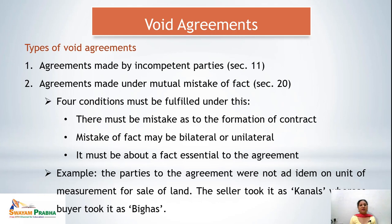The second type of Void Agreement is agreements made under mutual mistake of fact. Any consent not free — that is, influenced by mistake — makes it a void agreement. Mistake may be of two types: mistake of law and mistake of fact. Here we discuss mistake of fact, covered under Section 20 of the Indian Contract Act 1872. For an agreement to be covered under this section, four conditions must be fulfilled. The first condition is there must be a mistake as to the formation of the contract.